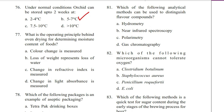Question 77. What is the operating principle behind oven drying for determining moisture content of foods? Color change is measured; loss of weight represents loss of water; change in refractive index is measured; or change in light of water. Answer is B: loss of weight represents loss of water.